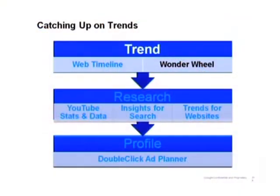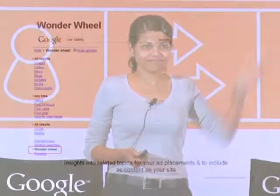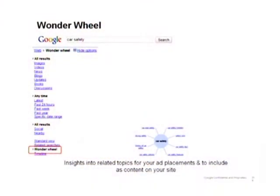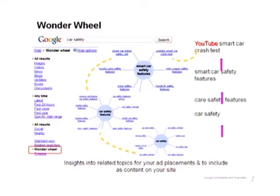He's still not fully convinced, so he decides to research even further, trying to find the trend. He uses the Wonder Wheel. You can find it in the same place — you type in your query, which is 'car safety,' and it's kind of like a mind map. Car safety appears and related searches appear around it. Mr. X clicks on 'car safety features,' then further on 'smart car safety features.' Something gets his interest: people are also searching for YouTube content about smart car crash tests. So people want to see crash tests on YouTube because they're all concerned about their safety.